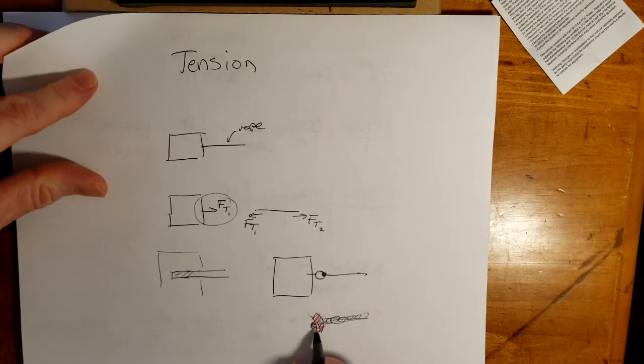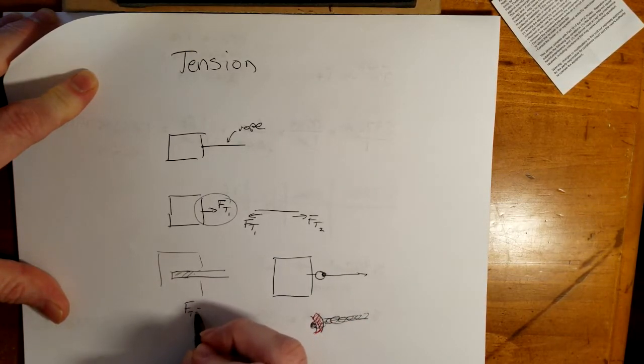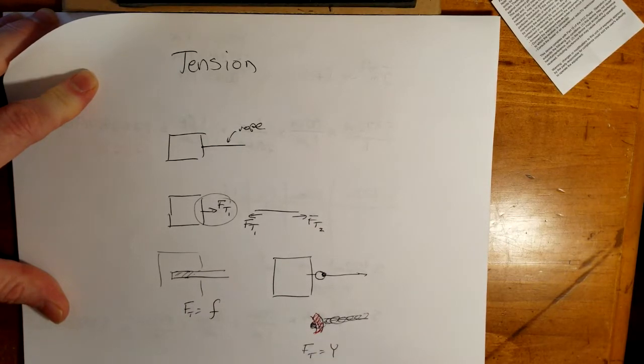And in this case, it's not friction, because if this were frictionless, the rope's still not going to slide one way or the other. What's happening here is the normal force. So here my tension is technically friction, and here my tension is technically a normal force.